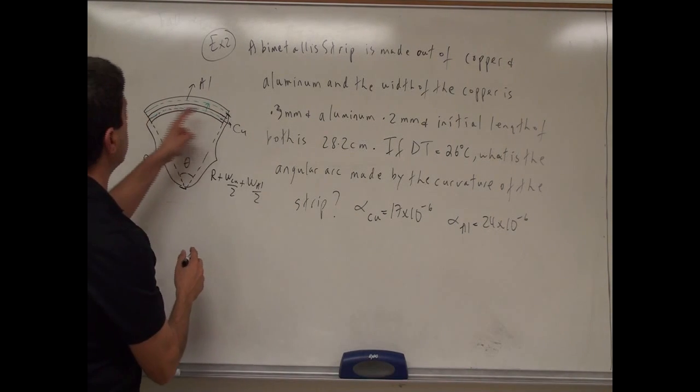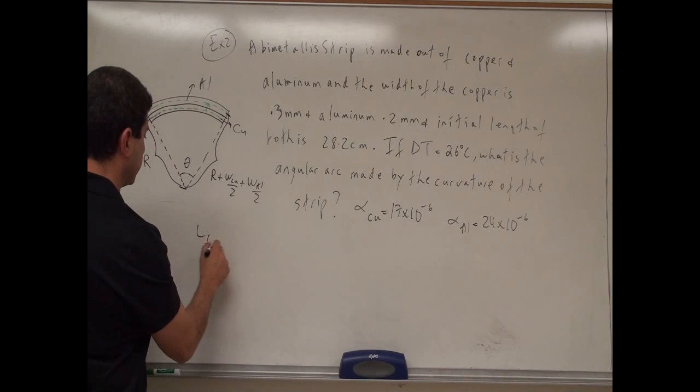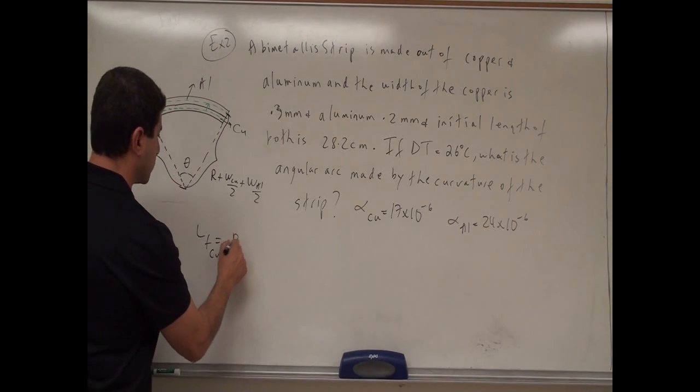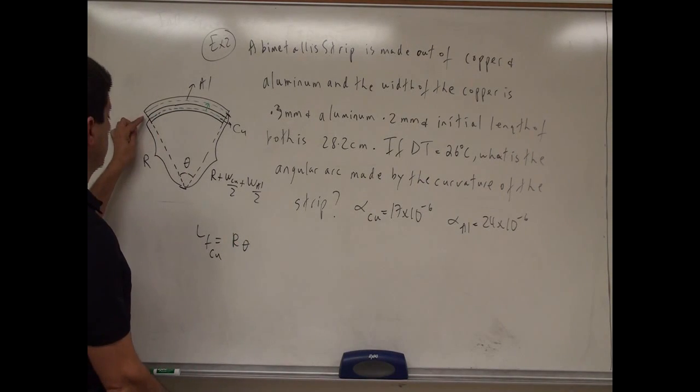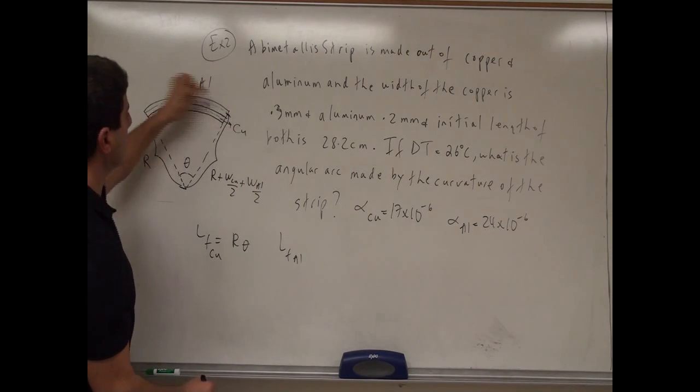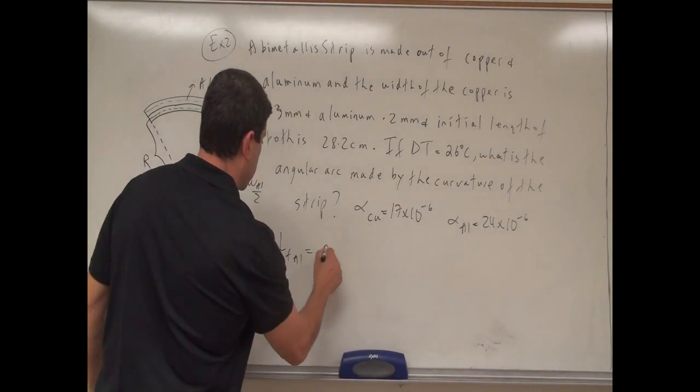So we can say the final length of the copper, l final of the copper, is going to be equal to the radius r times theta. And then the final length of the aluminum, which is the top one, is going to be r.